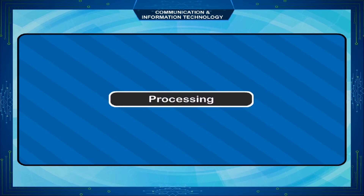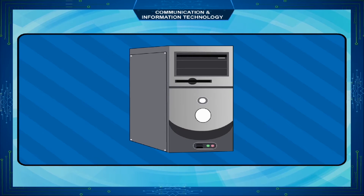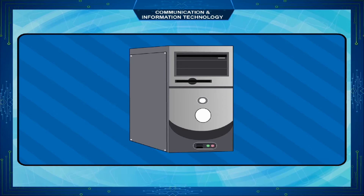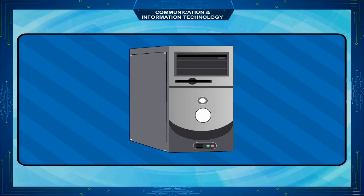Processing. Doing calculations, comparisons, or arranging data as per our requirements according to our instructions is called processing. The CPU of a computer is the processing device and it changes the raw data to meaningful information.